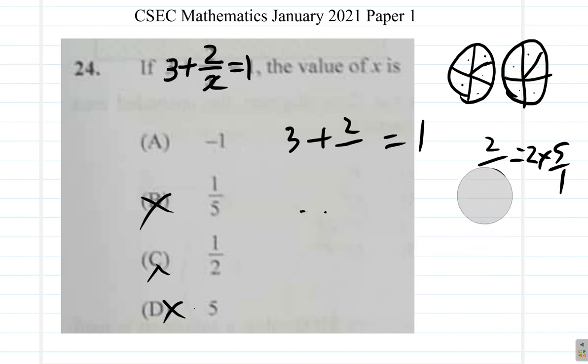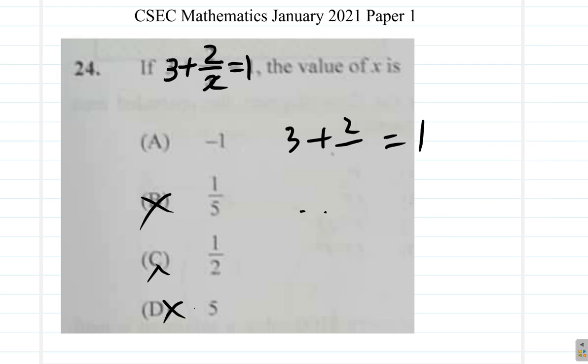So let's try again. Is X negative 1? Let's see. You put negative 1 here. 2 divided by negative 1 is what? Negative 2. So is 3 plus negative 2 equal 1? 3 plus negative 2 is the same as 3 minus 2. Is 3 minus 2 the same as 1? Yes. So you get the answer here. The answer is A.